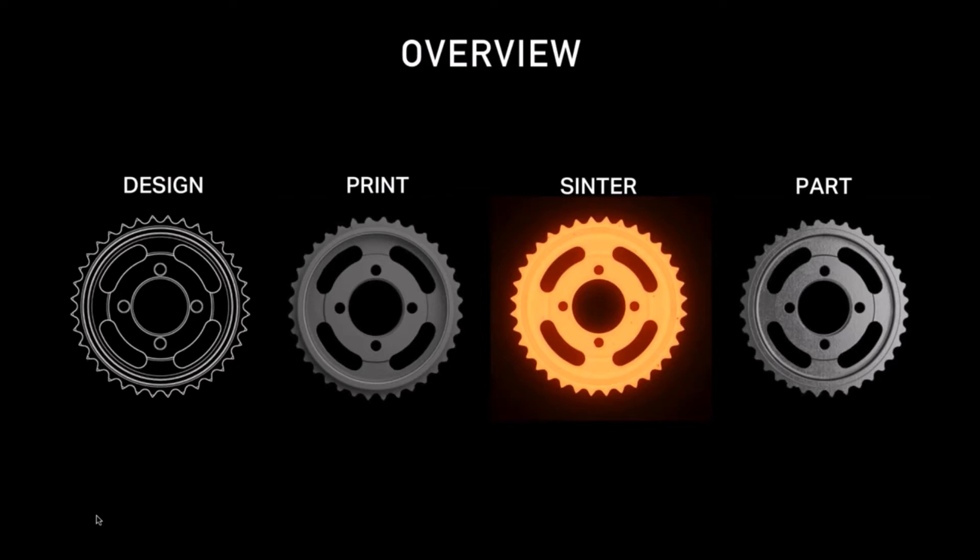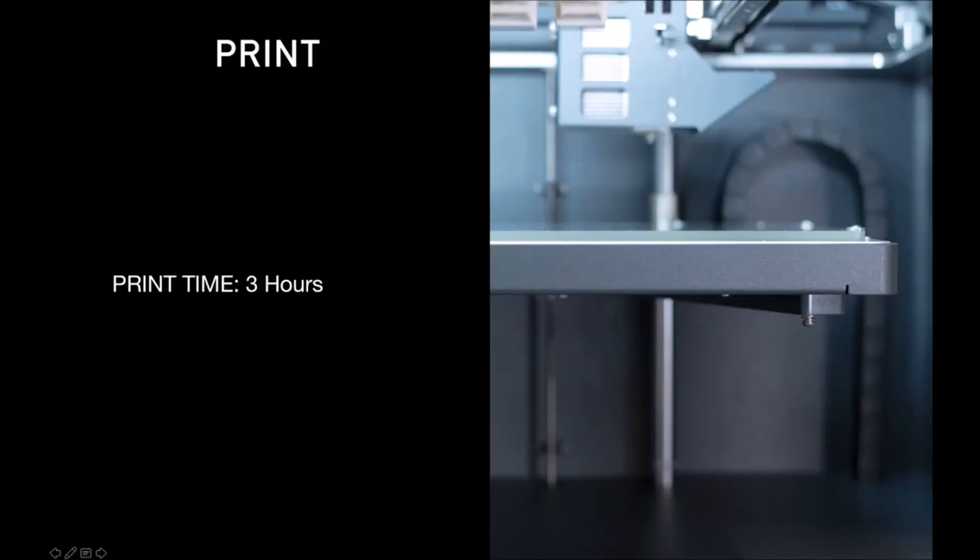Step one is designing your part and uploading it into the Markforged software. You use the CAD software that you're familiar with today to create the part that you want. You don't have to worry about scaling because we handle that for you to account for shrinkage during the sinter process. Then you simply upload an STL of that part to the Markforged IGR software.